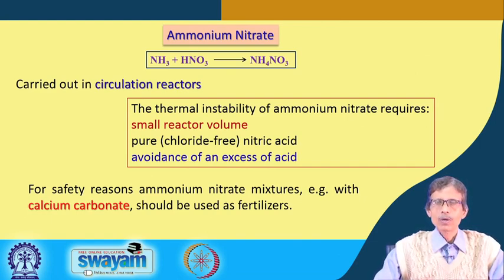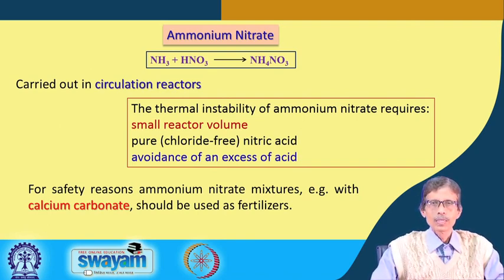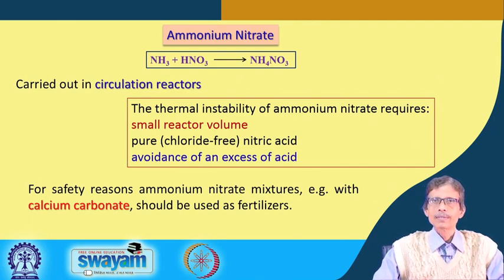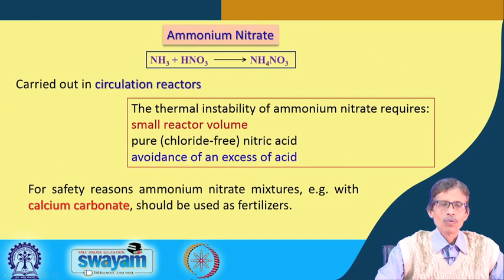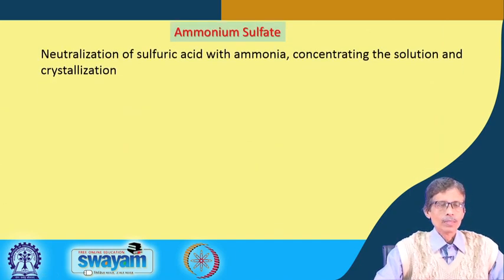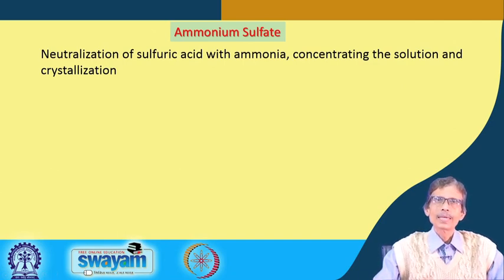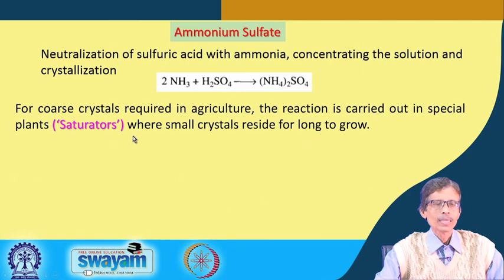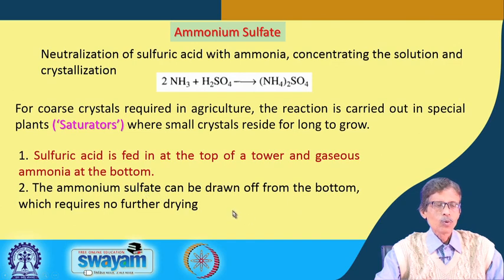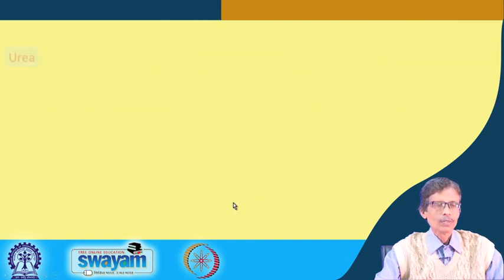The mixed form reduces cost - since ammonium nitrate has high industrial demand, including for explosives like RDX, mixing with calcium carbonate brings the cost down and increases handling safety in solid form. For ammonium sulfate, neutralization of sulfuric acid with ammonia, concentrating the solution, and then crystallizing gives the product. Gaseous ammonia is added and ammonium sulfate is drawn from the bottom, not requiring further drying.